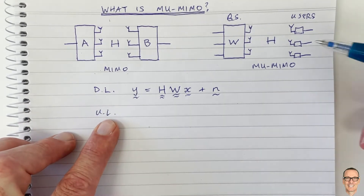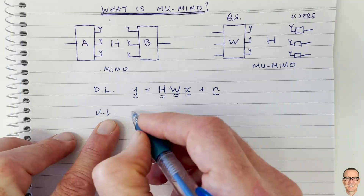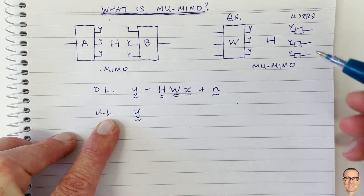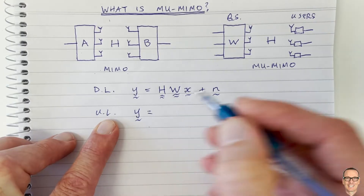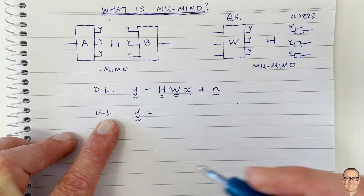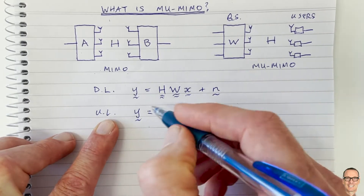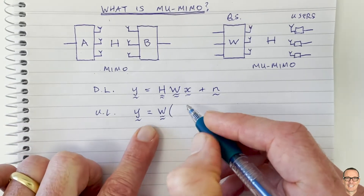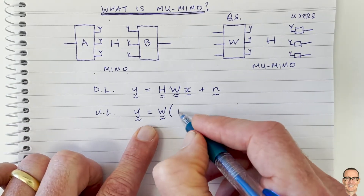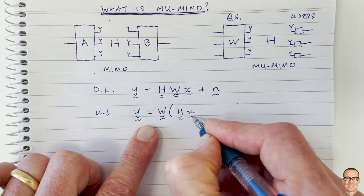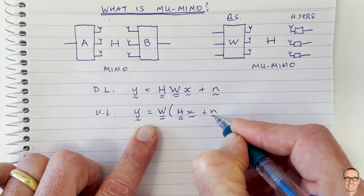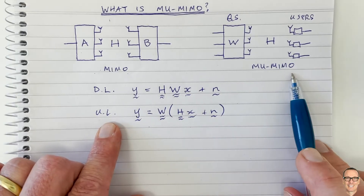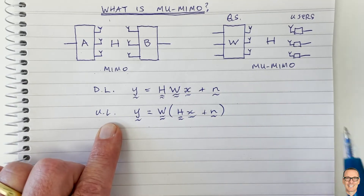We can also do multi-user MIMO on the uplink. In this case, the receive vector is at the base station side, and the transmit is coming from the users. Here we can do the post-processing after we've received from our receive antennas, so the equation is Y = HX + N. This is the key difference between the downlink and the uplink in multi-user MIMO.